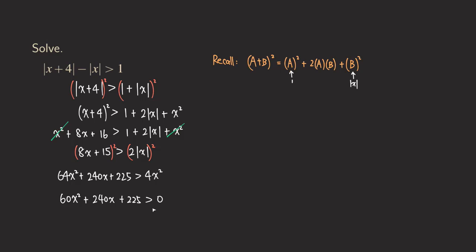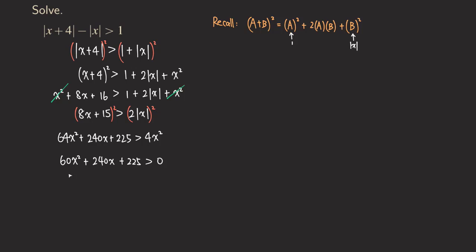There is a common factor for 60, 240, and 225, so we can factor that out. We can factor out 15 from everything — in fact we can divide the whole inequality by 15. If we divide everything by 15, we are going to get 4x squared plus 16x plus 15 greater than zero.